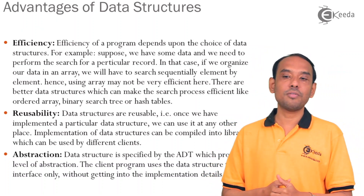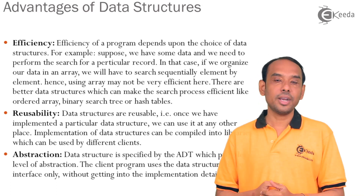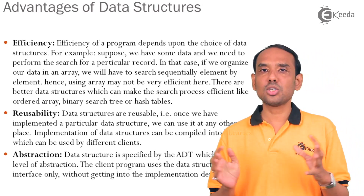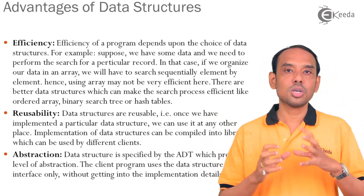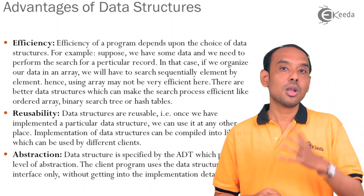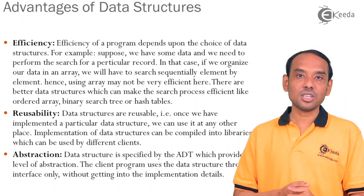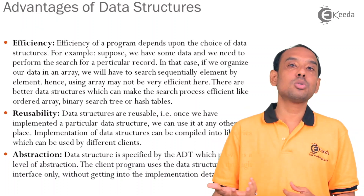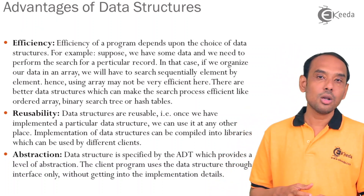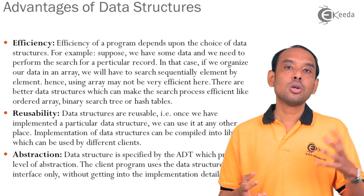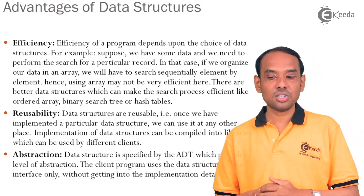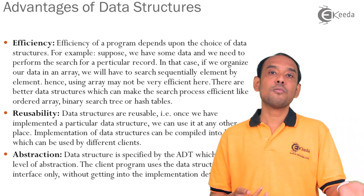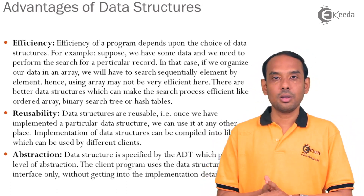The third important advantage of data structure is abstraction. Data structure has ADT — Abstract Data Types. It does not provide the complete implementation to the user; the user knows only the basic operations. Abstraction is hiding the unknown details — hiding internal data from the user and providing only the required implementation. Abstraction helps us reuse data, and it gives details to the user without exposing the implementation details of the data structure.